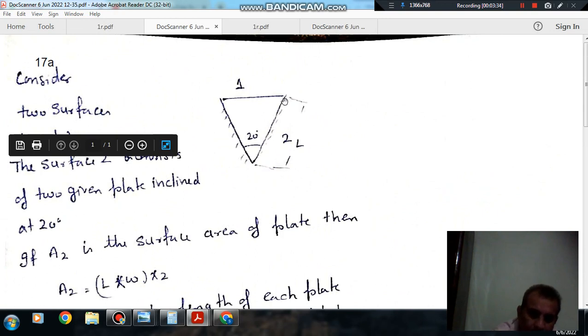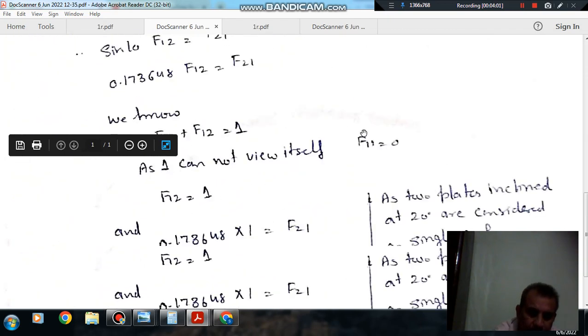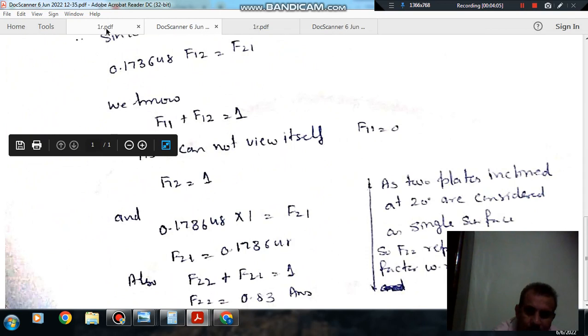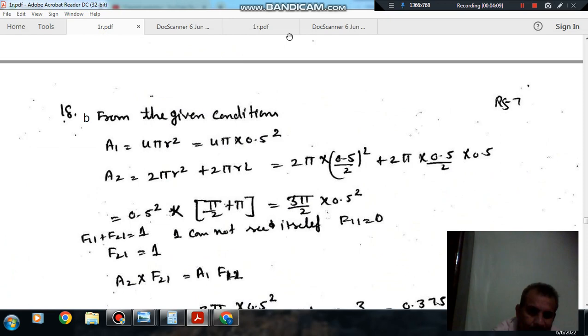Because if we consider these two as a separate surface, then this plate cannot see itself and this plate cannot see itself. So whatever be the shape factor between the two, the combined shape factor will be of one plate with the other, because all the radiation will go there and all the radiation will go there. So F22 will represent the shape factor of this plate with this plate. So the answer is 0.83, option A. Next question.